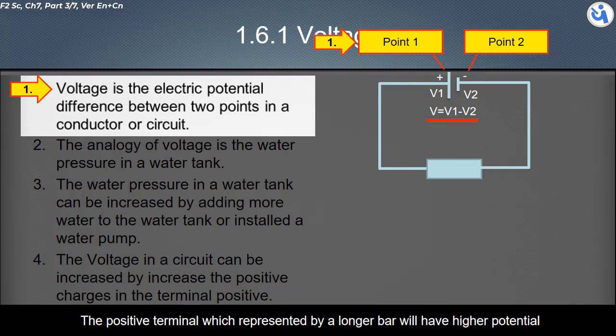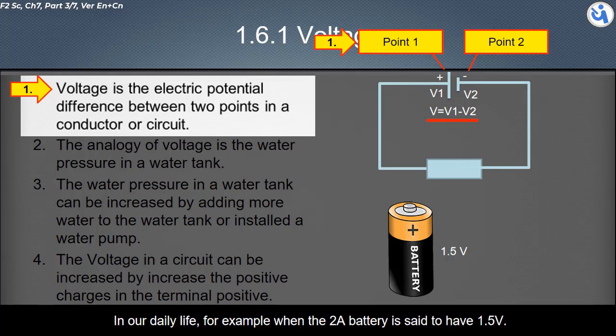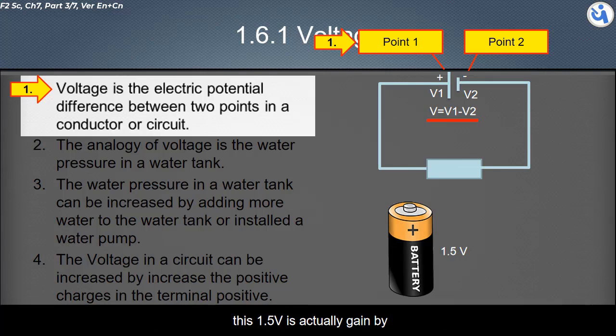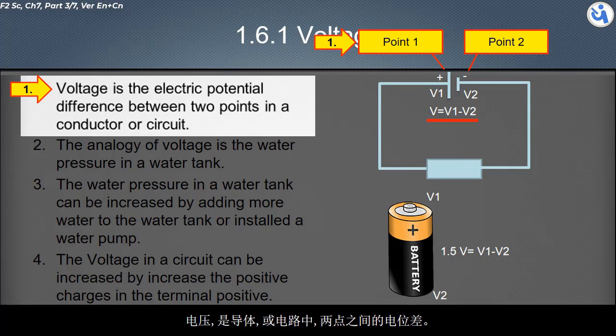The positive terminal, which is represented by a longer bar, will have higher potential than the negative terminal, which is represented by a shorter bar. For example, when a 2A battery is said to have 1.5 V, this 1.5 V is actually gained by minus the potential in positive terminal with potential in negative terminal.